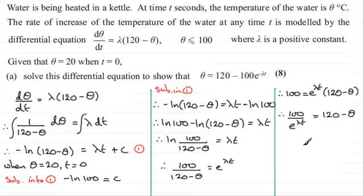And then I'm almost there now. If I add θ to both sides and subtract this term, we're going to have θ = 120 minus this term. But then I can bring e^(λt) up to the top and write it as a negative power. So it's e^(-λt), alright?